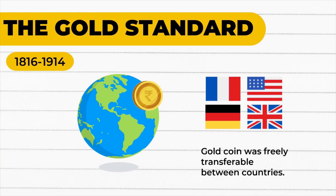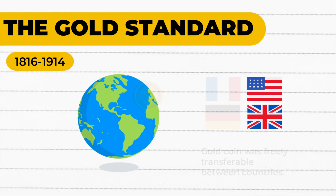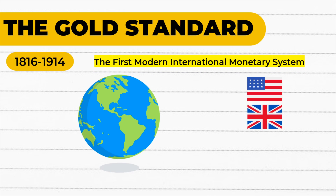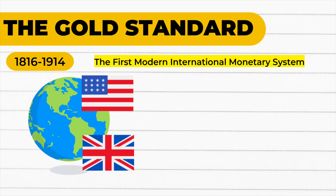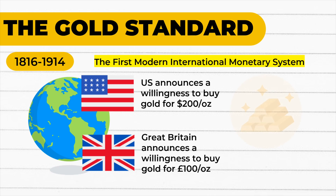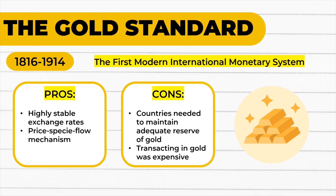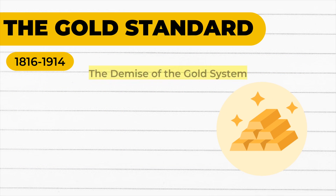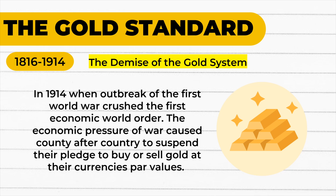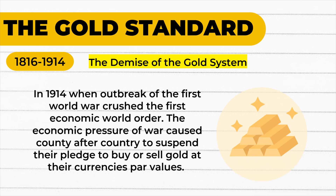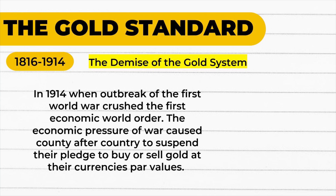Under the gold standard, each country had to establish the rate at which its currency could be converted to a weight of gold. For example, suppose the US announces a willingness to buy gold for $200 per ounce, and Great Britain announces a willingness to buy gold for 100 pounds — then 1 pound equals 2 dollars. The gold standard came to its demise in 1914 when the outbreak of the First World War crushed the First Economic World Order, causing country after country to suspend their pledge to buy or sell gold at their currency's par values.